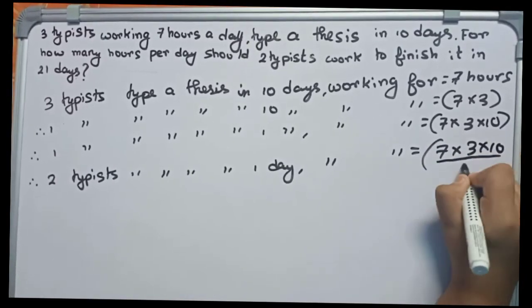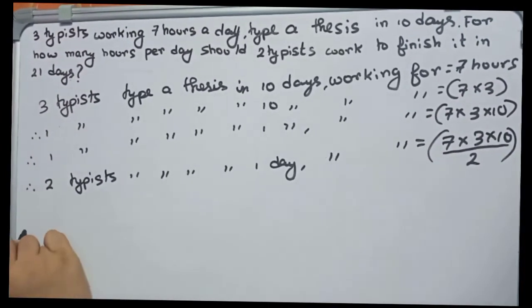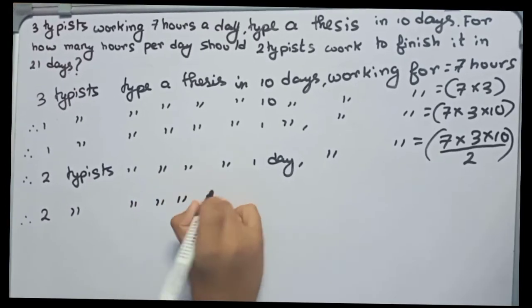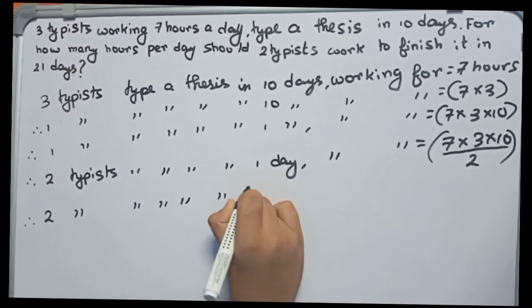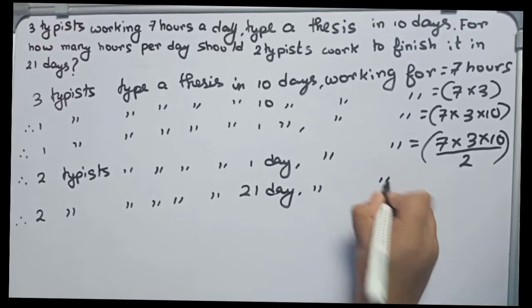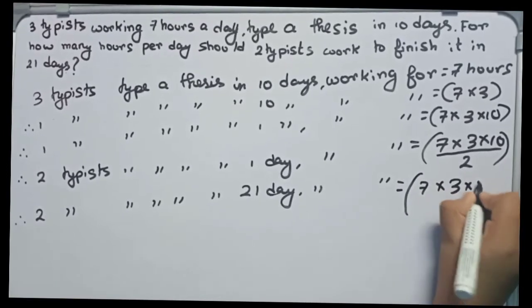We keep it like this. Now I'm writing that two typists type a thesis in 21 days working for equals to seven into three into ten divided by two divided by 21.